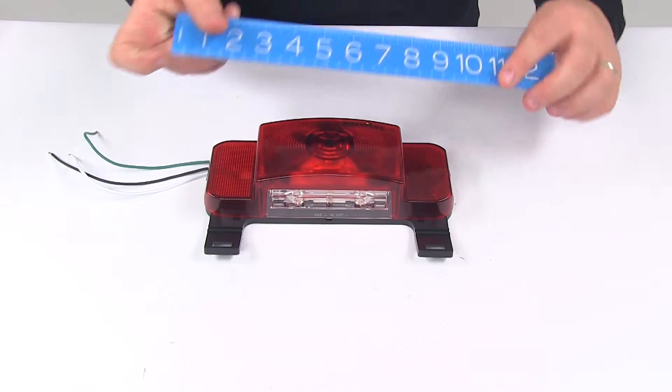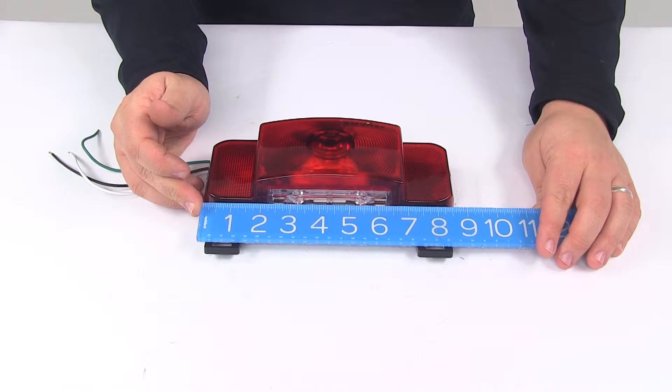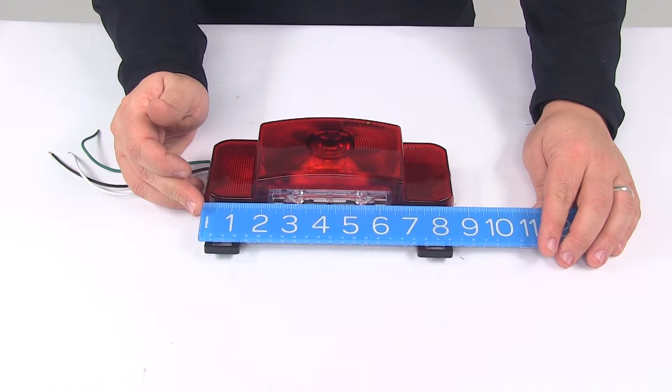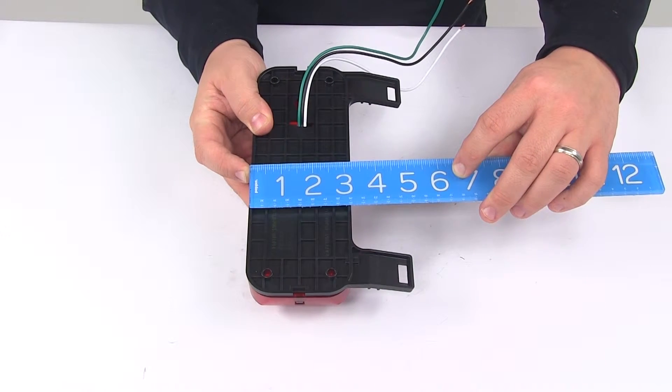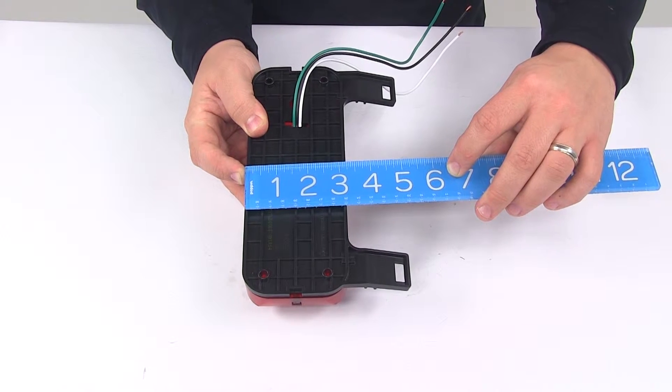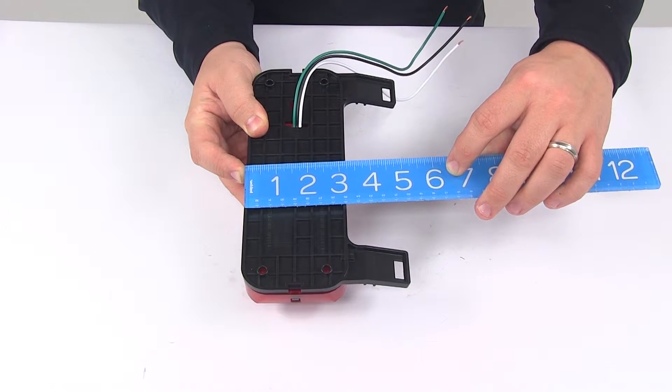The overall length of the light is eight and five eighths inches. The height of just the light area is three and three sixteenths inches. If we include the brackets for the license plate mount, we're looking at an overall height of about five inches.